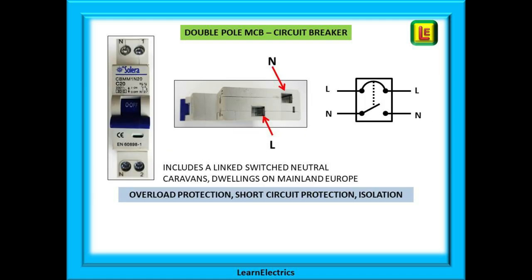A third construction of an MCB is the two pole device. These are obligatory on mainland Europe and also used in caravans in the UK. The neutral must be disconnected at the same time as the phase, so there are connections for phase and neutral on each MCB. The standard number is still EN 60898 but without the BS prefix. Otherwise they have the same protection and switching characteristics as the UK versions.